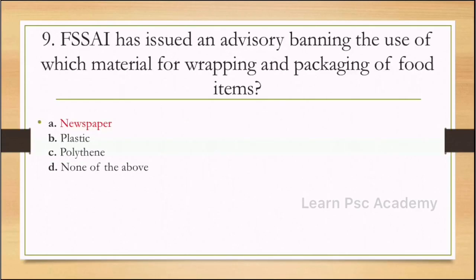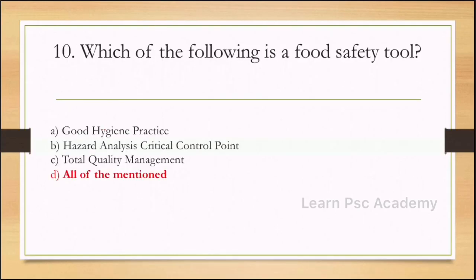Ninth question: FSSAI has issued an advisory banning the use of which material for wrapping and packaging of food items? Options: newspaper, plastics, polythene, none of the above. Correct answer is newspaper.